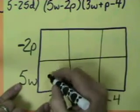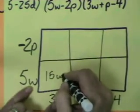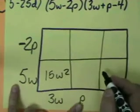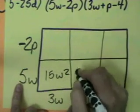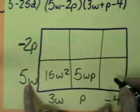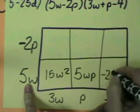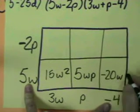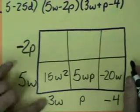Multiply it out. 3 times 5 is 15. W times W is W squared. 5 times 1 is 5, and W times P is WP. 5 times negative 4 is negative 20. I don't have something to multiply the W by, so it just stays.